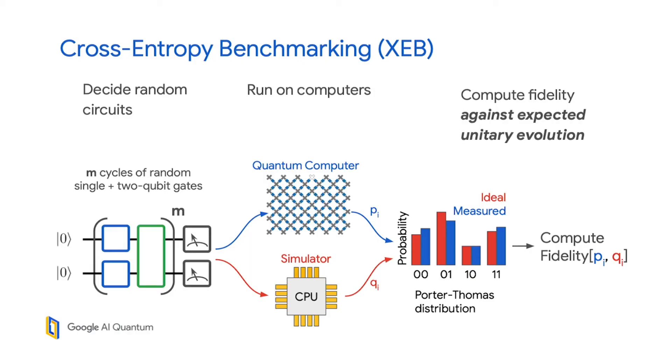I want to start by quickly reviewing cross-entropy benchmarking, which we sometimes call XEB. The way this works is we decide on some random circuits—these are interleaved layers of randomly chosen single-qubit gates and fixed two-qubit gates.